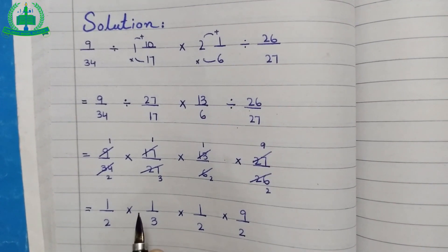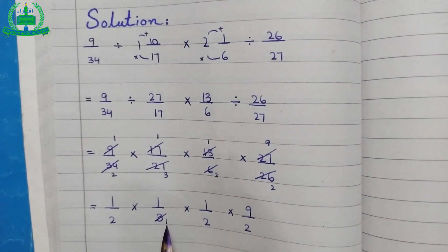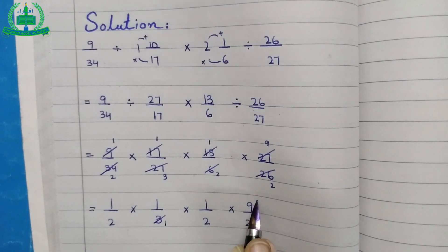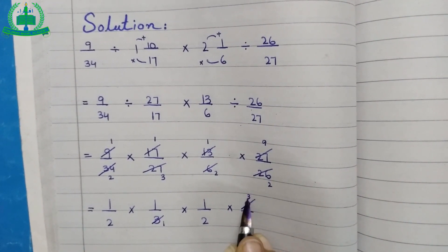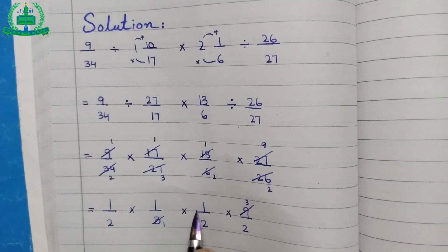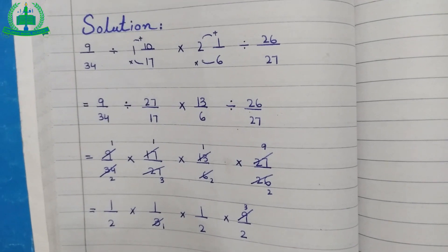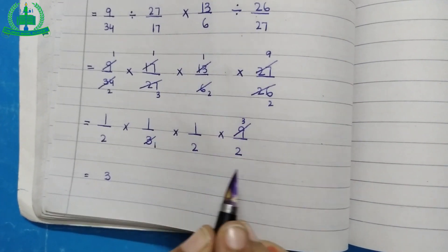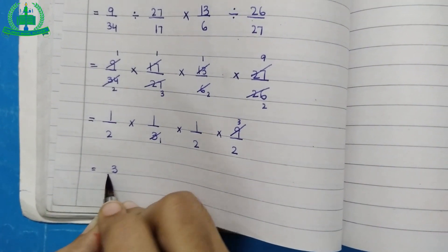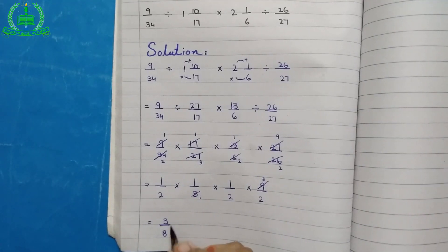Again we do cross multiplication: 3 multiplied by 1 equals to 3, 3 multiplied by 3 equals to 9. 1 multiplied by 1 equals to 1, 1 multiplied by 3 equals to 3. 2 multiplied by 1 equals to 2, 2 multiplied by 2 equals to 4, 4 multiplied by 2 equals to 8. So, 3 upon 8 is the answer.